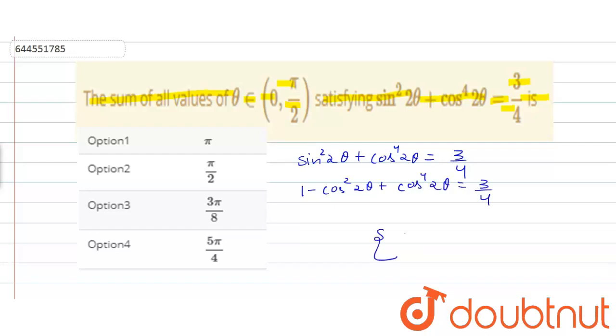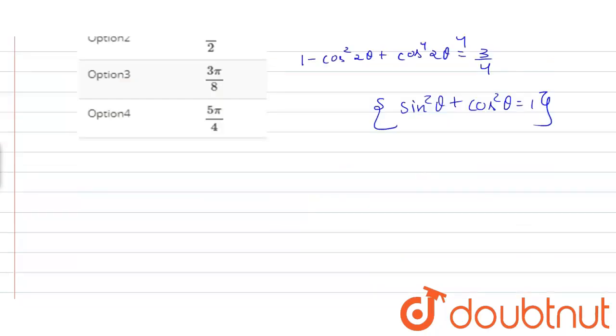By further solving this, we get 4 cos to the power 4, 2 theta minus 4 cos square 2 theta plus 1 equals 0. Therefore, we can write 2 cos square 2 theta minus 1 whole square equals 0.